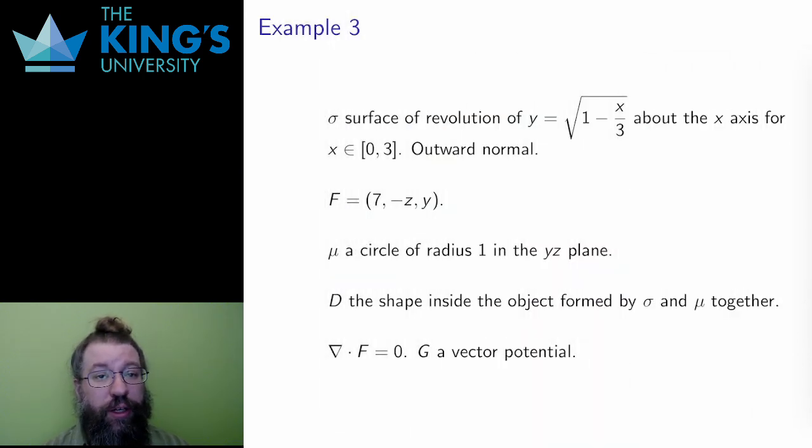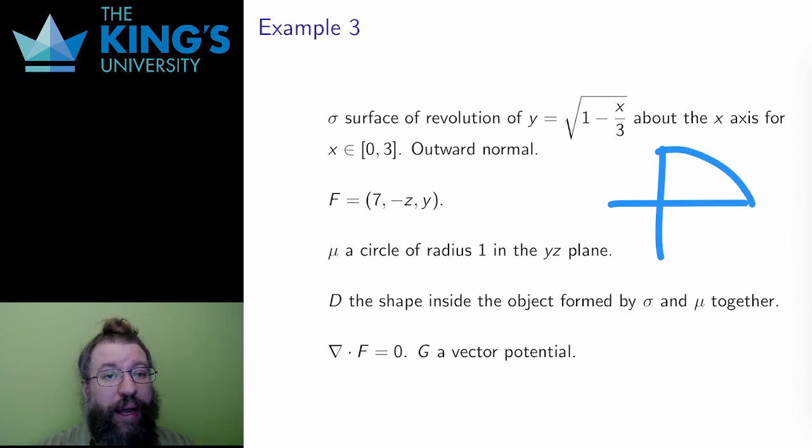Now let me move on to another clever use of the theorem. In this case, sigma is a surface of revolution I get by spinning the graph of this particular square root function around the x-axis for x from 0 to 3. The field I care about here is F equals 7, negative z, and y.